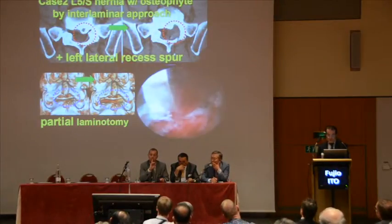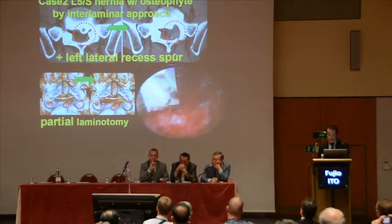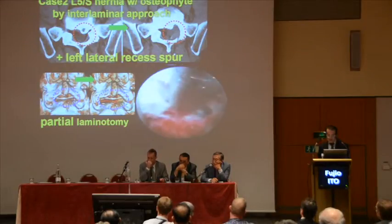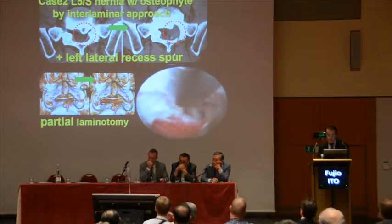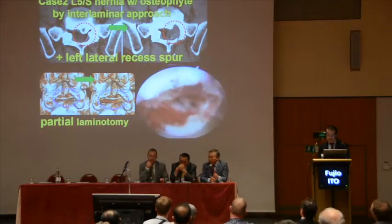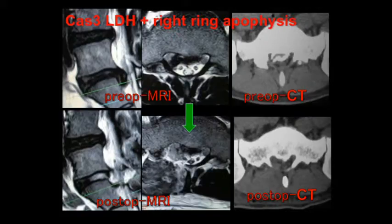Case 2: not only vertebral posterior spurs, but also lateral recess spurs at L5-S1 must be resected by the interlaminar approach using an electrical shaver, a Kerrison rongeur, or a chisel. Microscopy is easier for lateral recess cases, but more invasive. The MRI and CT of Case 3 show the resection of the hernia mass with slight osteophytes on the lower side.